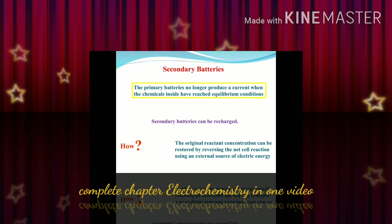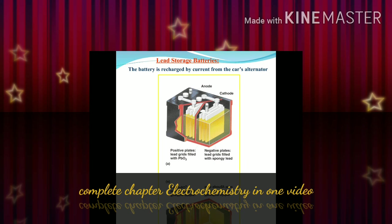In the mercury cell: at the anode, zinc + hydroxide ion gives zinc oxide and water; at the cathode, mercury oxide with water and electrons gives mercury. Secondary batteries can be recharged so they can be reused — they get discharged and then recharging can be done again.